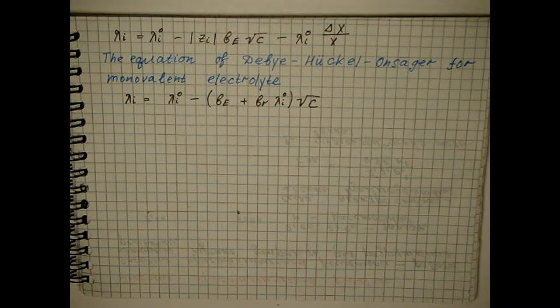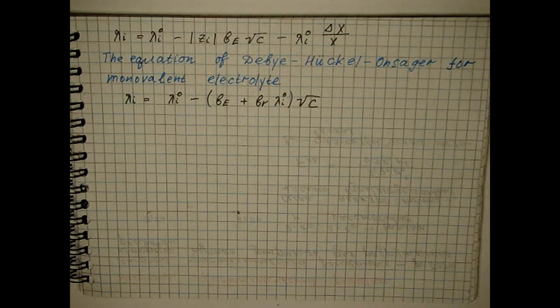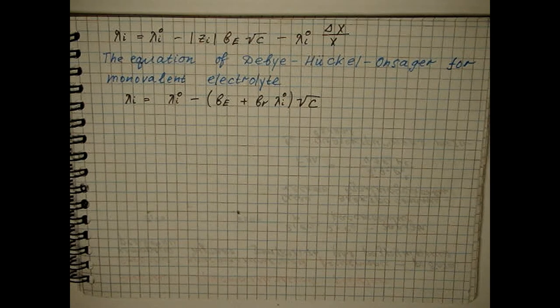If we add the expressions for the cation and the anion, then we get a similar ratio for the equivalent electrical conductivity.